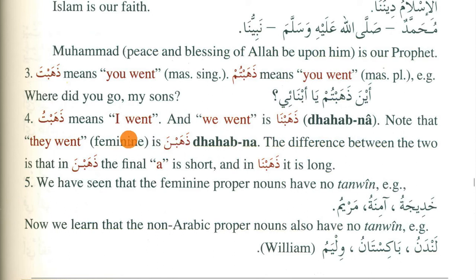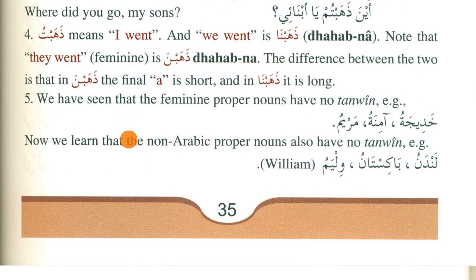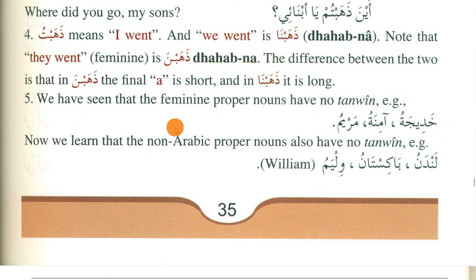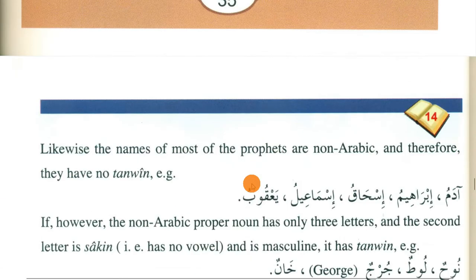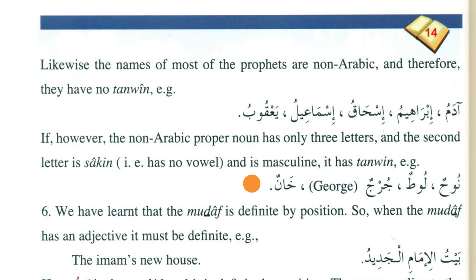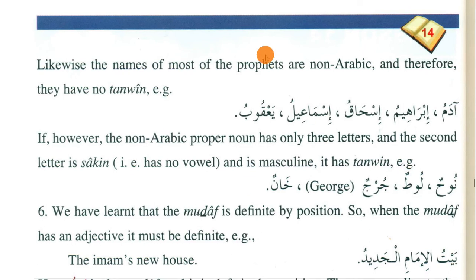Before this, you have learned that with a noun we use tanwin, and with a proper feminine noun we use no tanwin — like 'Khadijatu', 'Aminatu', 'Maryamu'. Now you will learn that non-Arabic proper nouns also don't have any tanwin. So these non-Arabic proper nouns will not use tanwin with them.